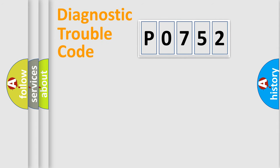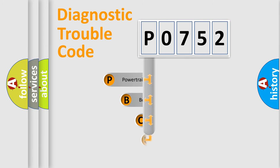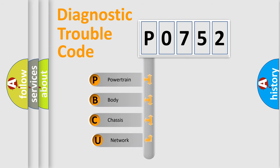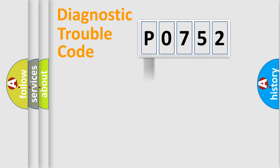First, let's look at the history of diagnostic fault code composition according to the OBD2 protocol, which is unified for all automakers since 2000. We divide the electric system of the automobile into four basic units: Powertrain, Body, Chassis, and Network.